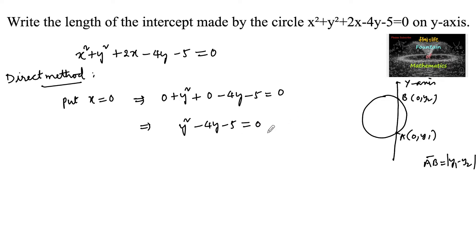Let y₁ and y₂ are the roots of y² - 4y - 5 = 0.